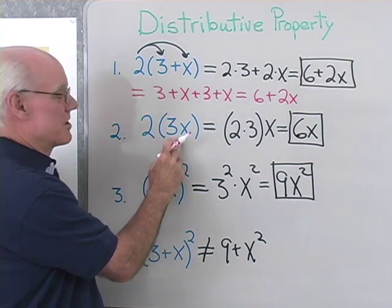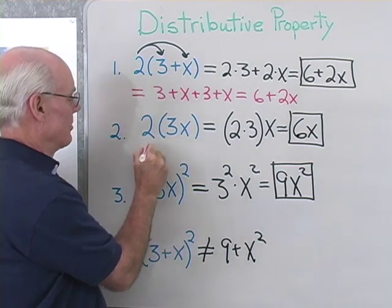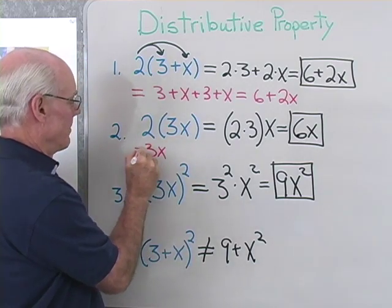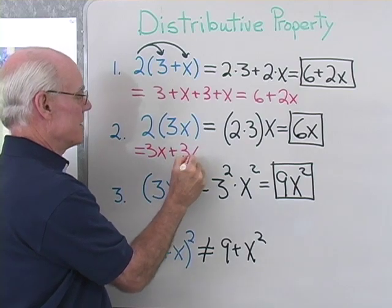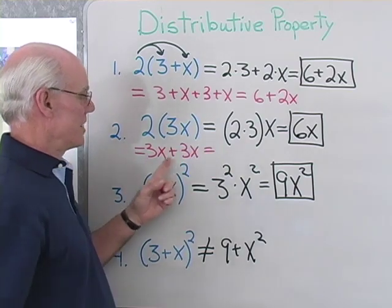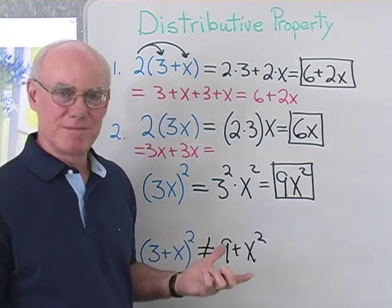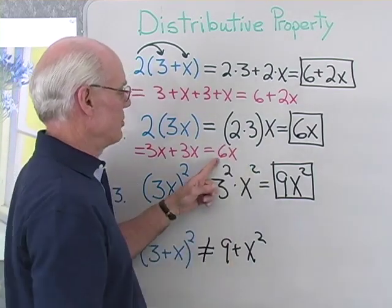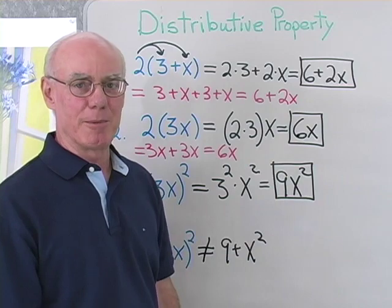How about 2 times 3X? Well it's going to mean the same thing: 3X plus 3X. Well 3X plus 3X is going to be 6X. So when I add those two I get 6X, which is the result I got before.